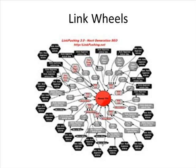Then they go out and create a bunch more properties that link to those web 2.0 properties. And then they go out once again. As you can see in the diagrams, all the black boxes around the edge — those are a lot of lower quality type links. But they funnel all of those back at your other links, back at your web 2.0 properties, that then point to your money site.